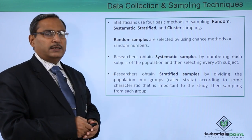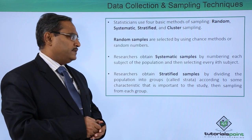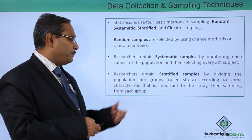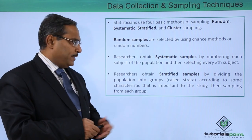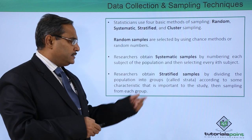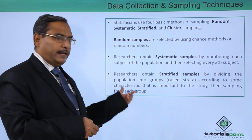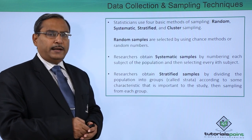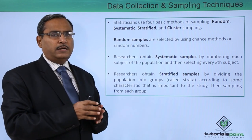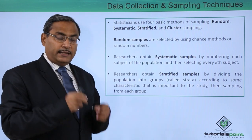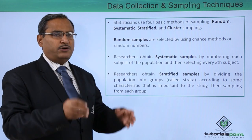Next, we go for stratified samples. A researcher obtains stratified samples by dividing the population into groups, also known as strata, according to some characteristic that is important to study, and then sampling from each group. Depending upon some property, the population is divided into multiple strata and subjects are taken from each stratum.